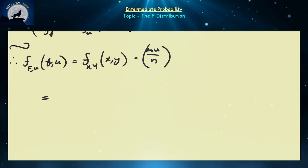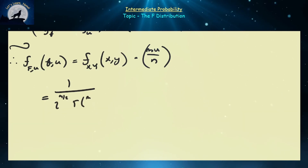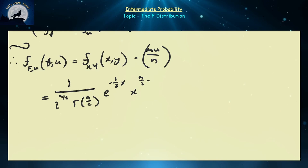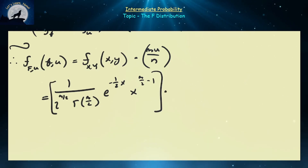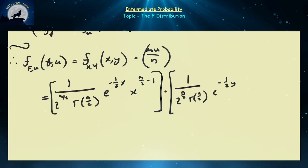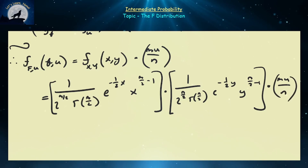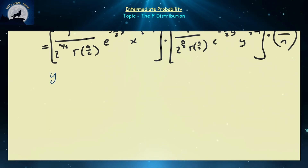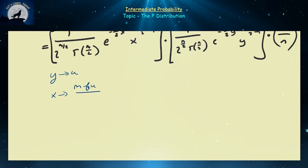The joint PDF equals: 1 over 2^(M/2) times Gamma(M/2), times e^(-x/2) times x^(M/2 - 1) — that's the first chi-squared PDF — multiplied by 1 over 2^(N/2) times Gamma(N/2), times e^(-y/2) times y^(N/2 - 1) — the second — times the Jacobian MU over N. We then map Y to U and X to MFU over N.